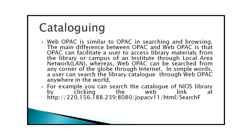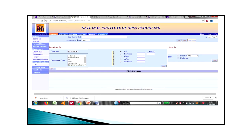The search facility informs users about the availability of each item for circulation, including the current status of individual copies of a title and reserved status. Web OPAC is an OPAC provided on the web, accessible from anywhere using the internet. The main difference between OPAC and Web OPAC is that OPAC facilitates access from within the library or campus through a local area network, whereas Web OPAC can be searched from any corner of the globe through the internet. For example, you can search the catalog of the NIOS library through its web link.